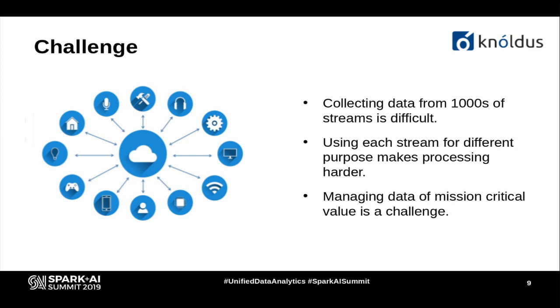How can we use each different stream to make separate meaning out of it? For healthcare, it's patient data that matters, and processing healthcare data is totally different from processing financial data — different parameters, different use cases. The last challenge is managing data of mission-critical value. Stream data is used to deliver value in real time — in split seconds. Managing mission-critical data like patient health and stock market data is quite important, so how do we overcome that challenge?